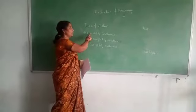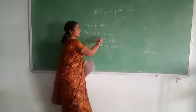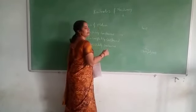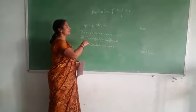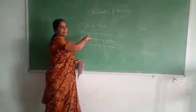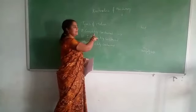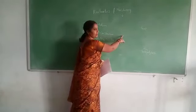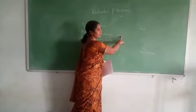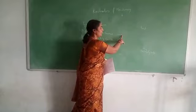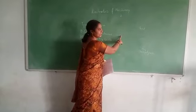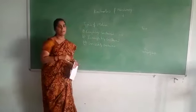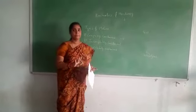Coming to the first type: completely constrained. We say that when the relative motion between the two elements is in only one direction, regardless of the direction of the applied force, then we say it is completely constrained.